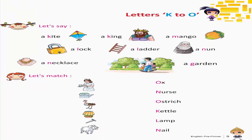Letters K to O. Let's say: A kite, A king, A mango, A lock, A ladder, A nun, A necklace, A garden. Let's match.